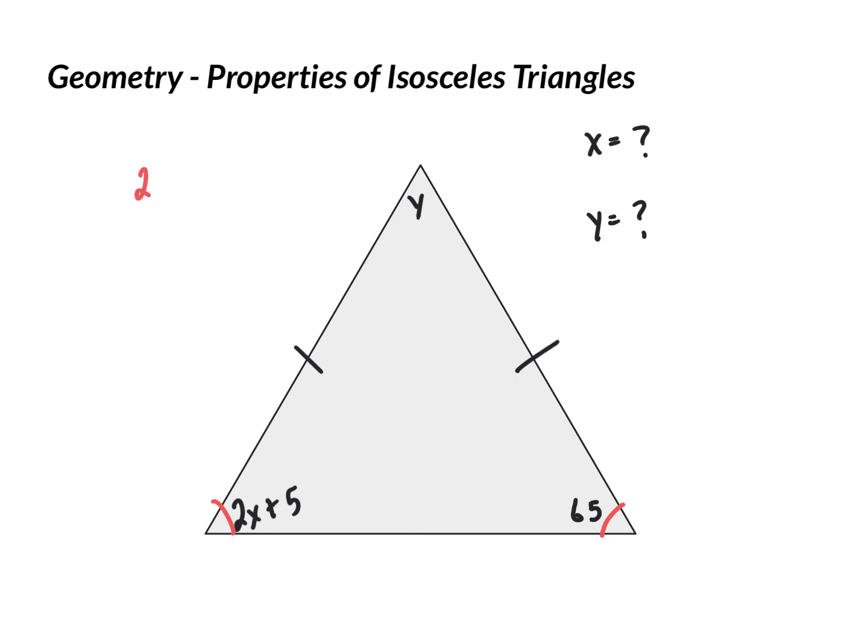So, we can right away say, 2x plus 5 must equal 65. Subtract 5 from both sides. 2x is equal to 60. Divide both sides by 2. So, we've now solved for x. It's 30.